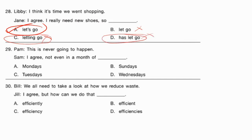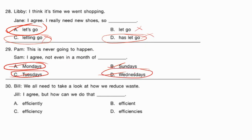'Pam: This is never going to happen.' 'Sam: I agree, not even a month of ___.' The expression 'not even a month of Sundays' means it will never get completed even if you work on Sundays. Monday, Tuesday, and Wednesday are regular weekdays. The correct option is Sundays — 'not even a month of Sundays.'